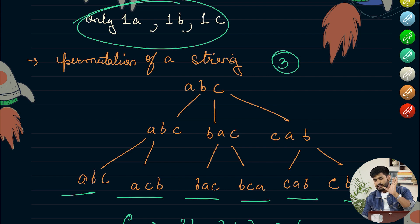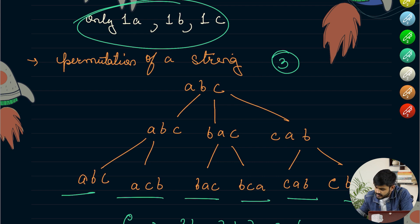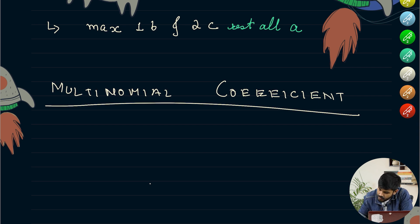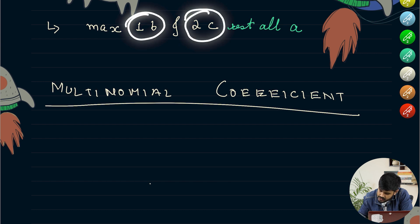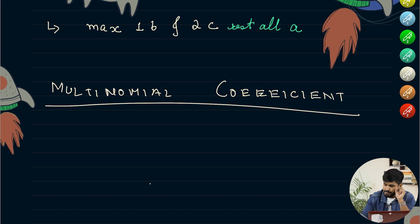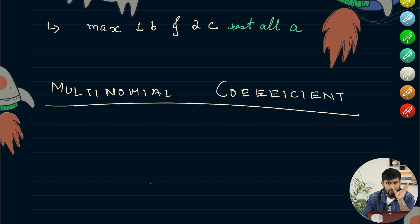Now let's understand the given problem. In this problem, you are told how many strings you can make by using at most 1B and 2C. 'At most' means maximum. Remember: we can use 0B or 1B; for C we can use 0C, 1C, or 2C; and all remaining positions would be filled with A.